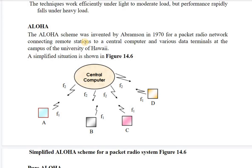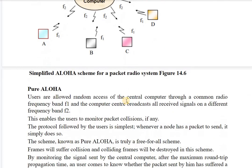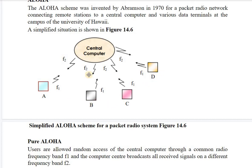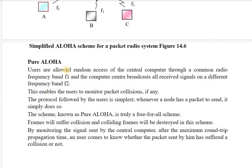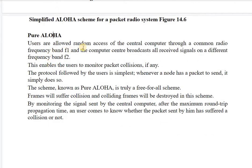Aloha was the first protocol, introduced in 1970 by Abramson. It was first used for packet radio networks connecting remote stations to central computers and data terminals at the University of Hawaii campus. Different frequencies were used: stations used frequency F1 for sending data and the central computer used frequency F2 to broadcast messages to clients. Aloha is divided into two types: pure Aloha and slotted Aloha.